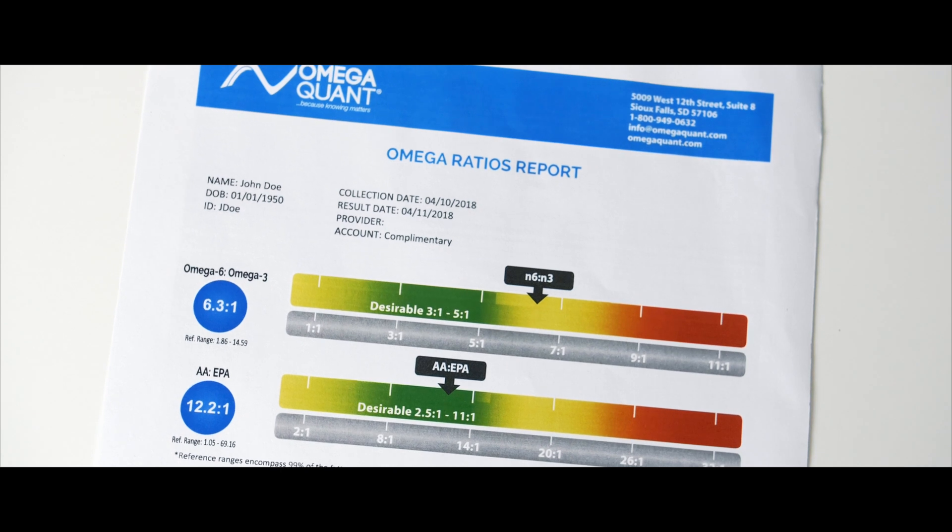The total amount of omega-6s and total amount of omega-3s are divided by each other and you'll get a ratio. For the total omega-6 omega-3 ratio, we recommend being in a range of three to five to one. So three or five is for the omega-6 side and one is the omega-3 side.